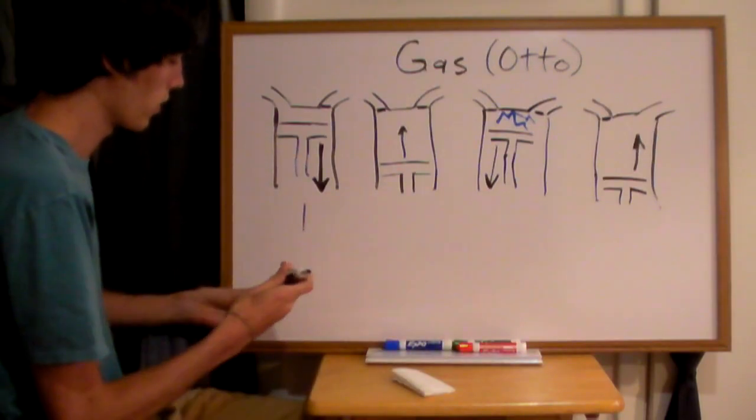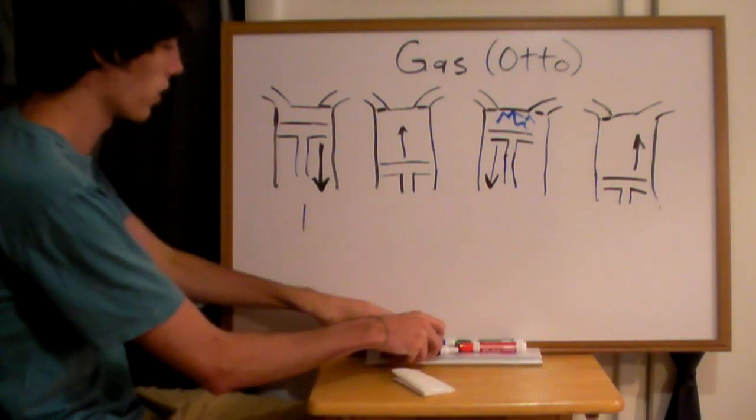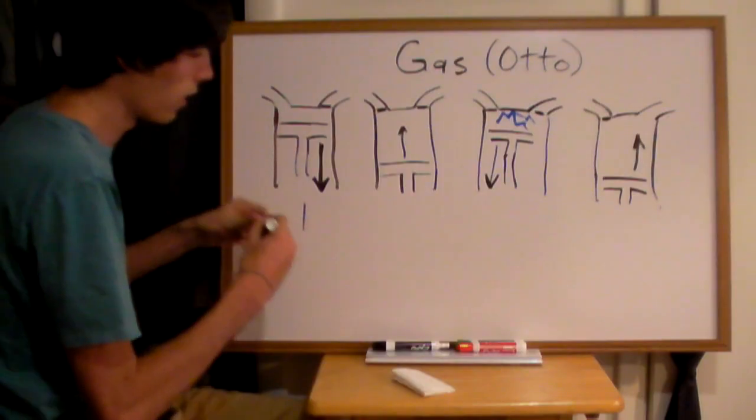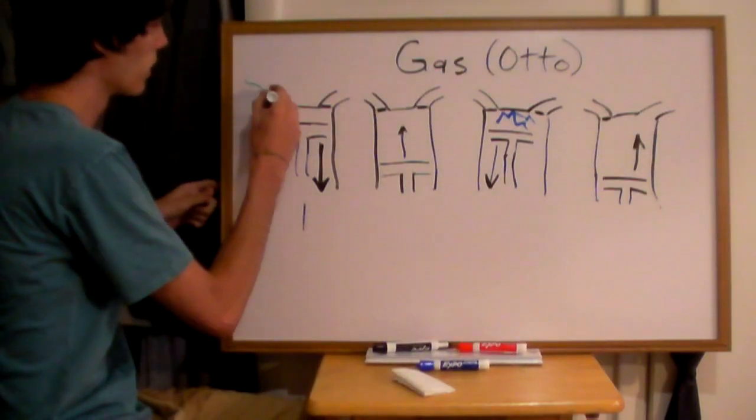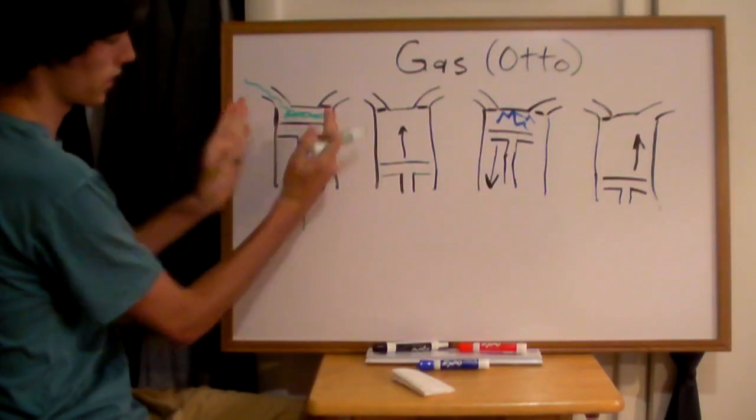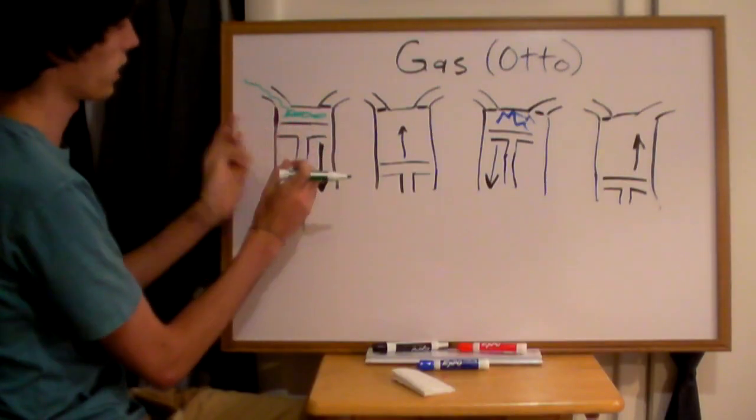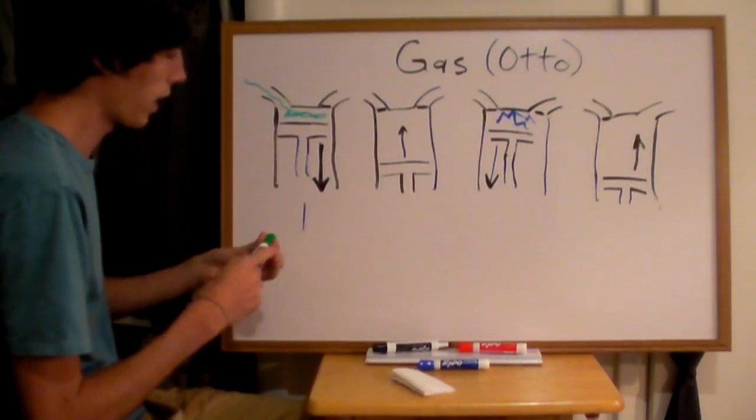Step one, you've got the intake stage and so you're going to be pulling in an air-fuel mixture. Let's go ahead and use green for that. We'll have an air-fuel mixture coming in here and filling this chamber. And this piston inside of the cylinder here is going to pull down and it's going to draw in this air-fuel mixture - gasoline combined with air.